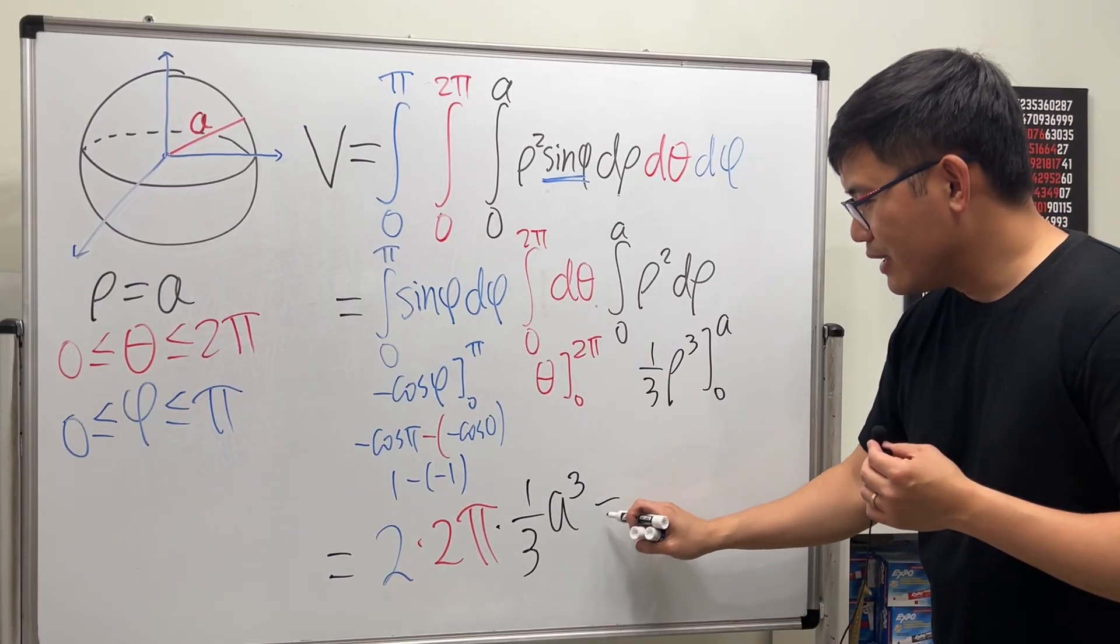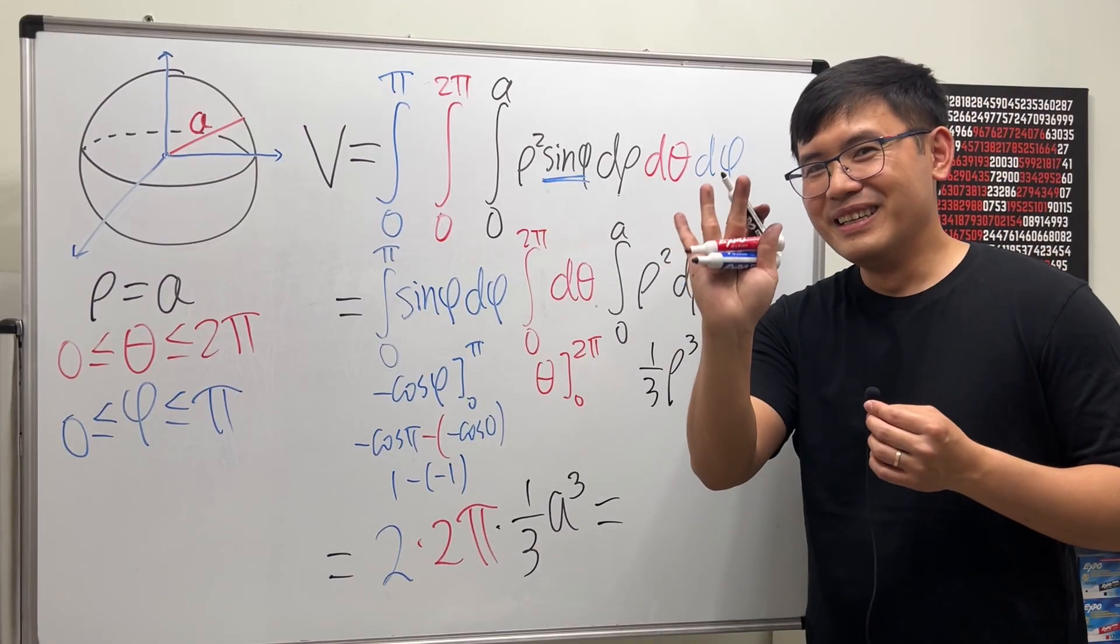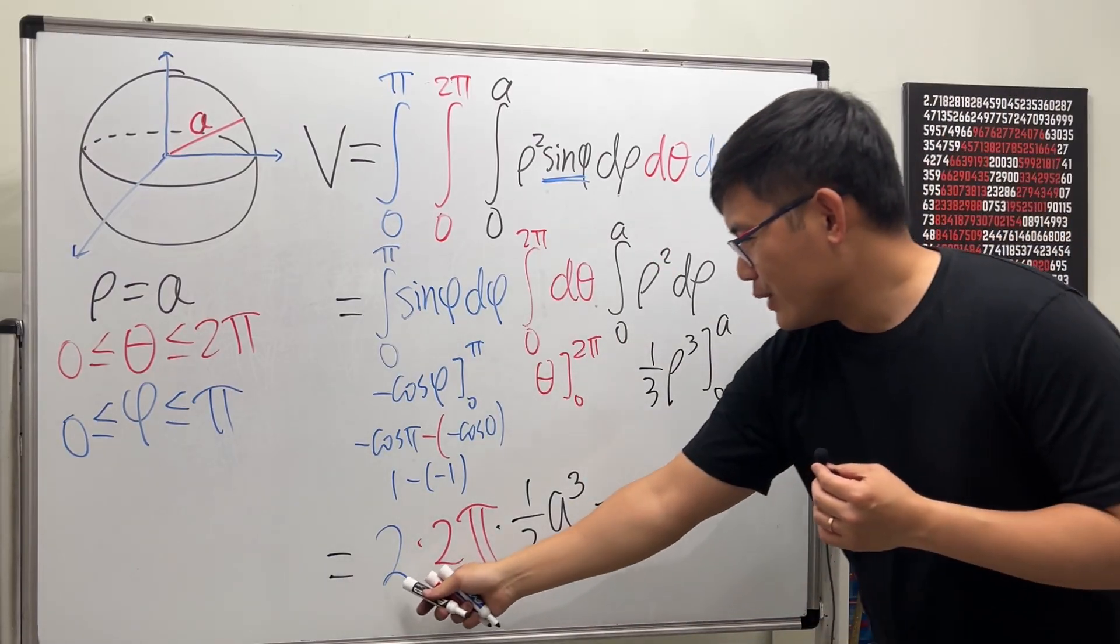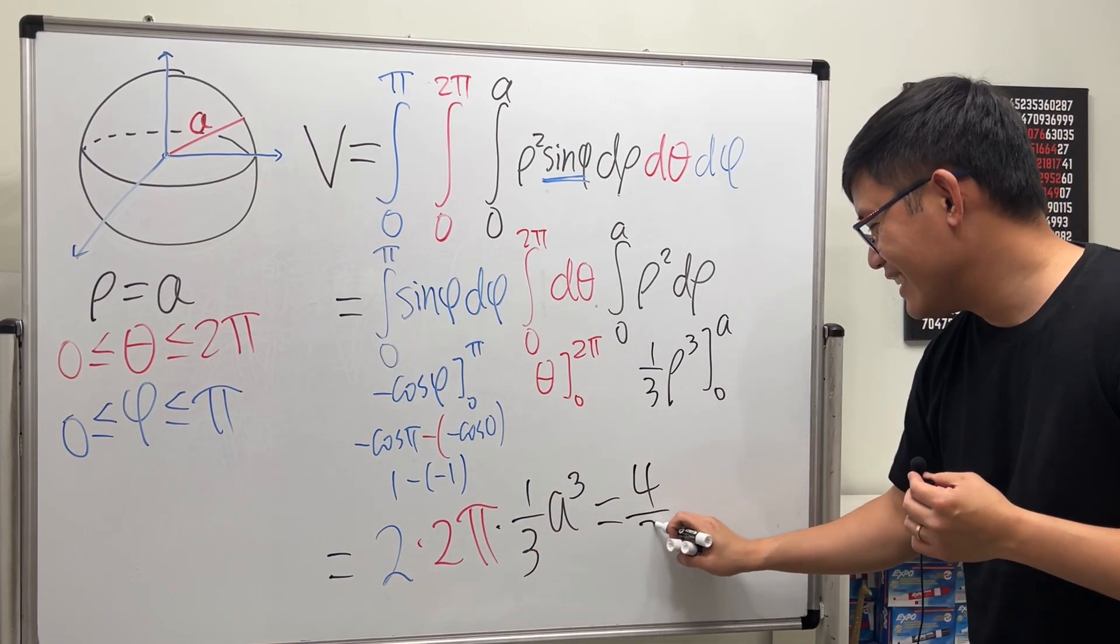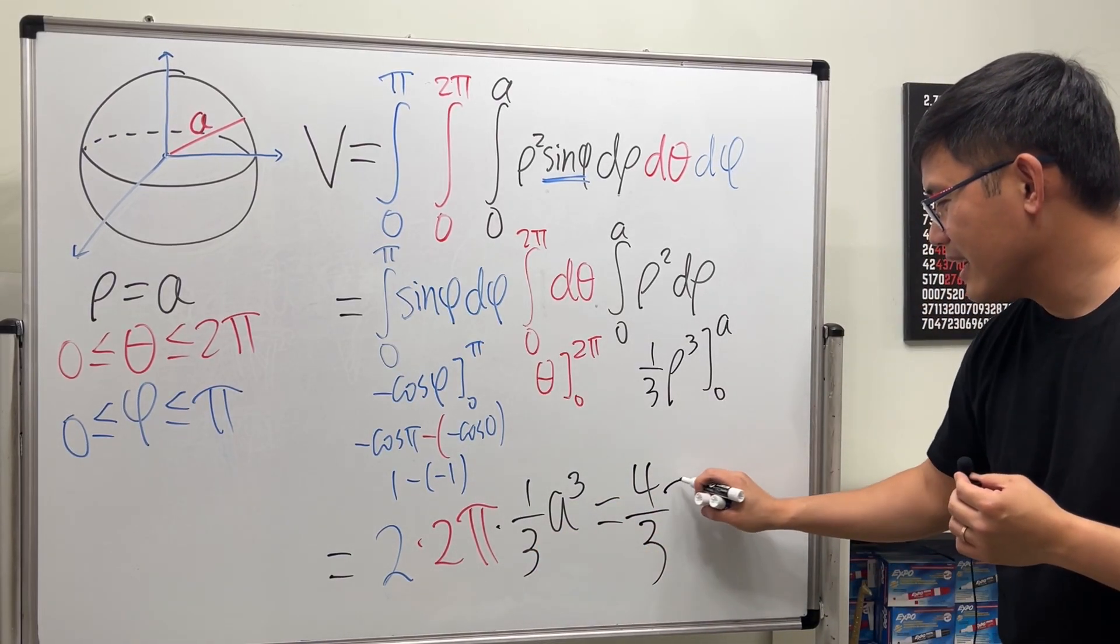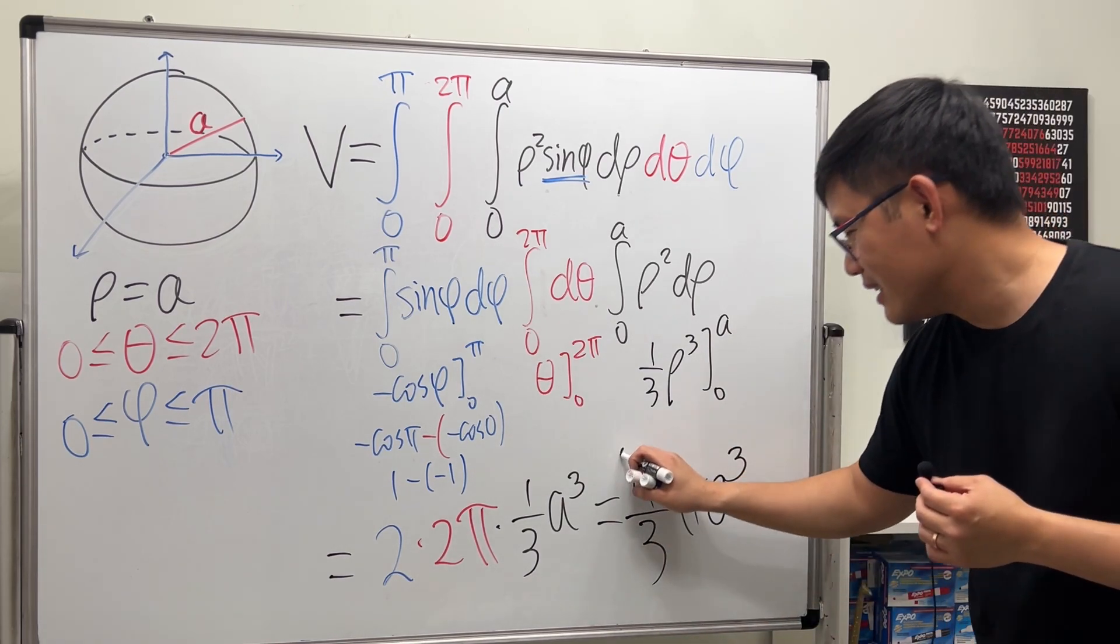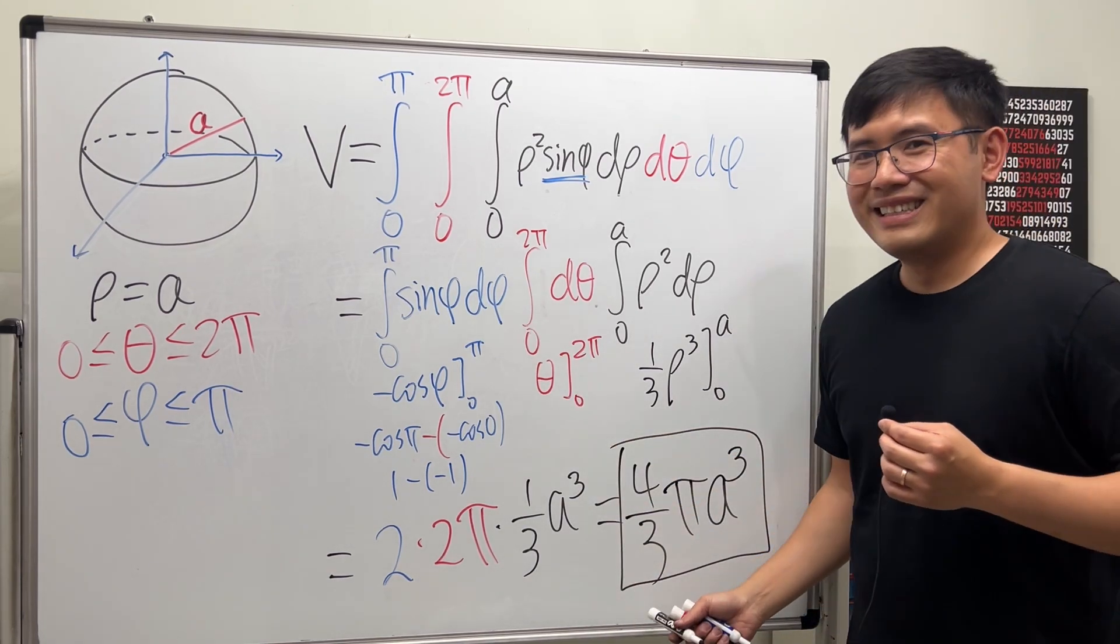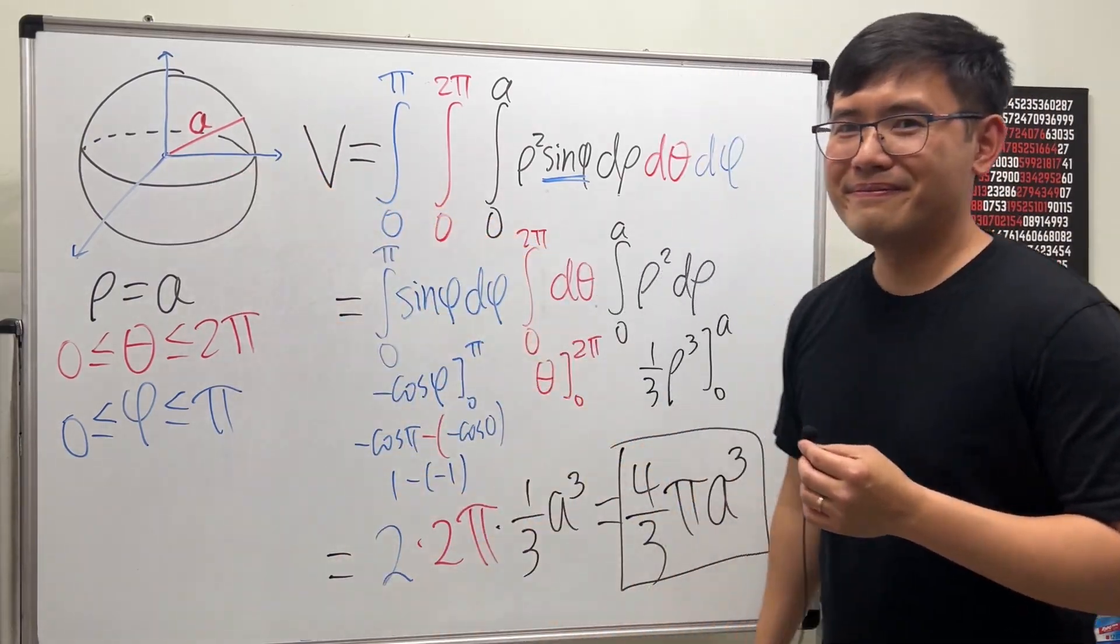Now, ladies and gentlemen, in honor of a triple integral, I'm holding up my triple pens here. 2 times 2 is 4. Times 1 is 4. Over 3. π is π. And then the radius is a, and then raised that to the third power. This is for sure the volume of a sphere with radius a. Cool, huh?